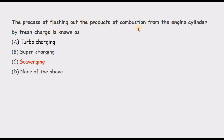The next question: the process of flushing out products of combustion from the engine cylinder by fresh charge is known as? Turbocharging enhances power output using exhaust energy. Supercharging densifies the charge using a compressor to burn more energy — both are power enhancement methods. The remaining option, scavenging, is the correct answer. Scavenging is defined as the process of flushing out exhaust gases from the cylinder with the help of incoming new charge.